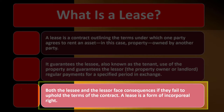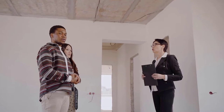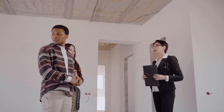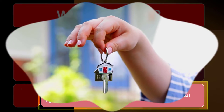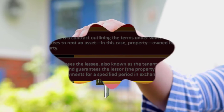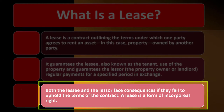Both the lessee, the renter, and the lessor, the landlord, face consequences if they fail to uphold the terms of the contract. If you violate the contract, there could be consequences. On the lessee side, it might be not paying rent or not taking care of the property as promised. On the lessor side, possibly not providing the service or amenities they promised.